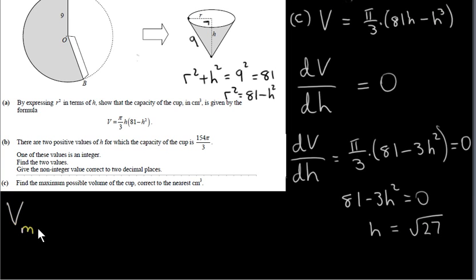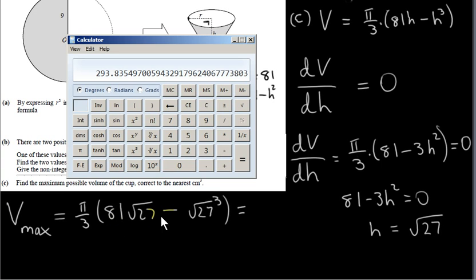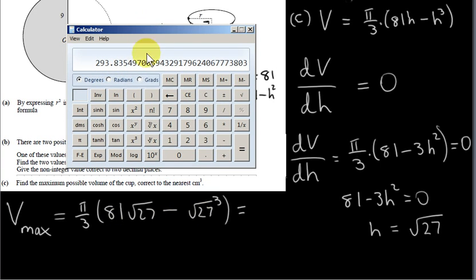Now we find the maximum volume by plugging H equals root 27 into the volume formula. We can call it V max to emphasise we're getting the maximum volume. We get pi over 3 times 81 times root 27 minus root 27 cubed. Working this out gives 293.835... Rounding to the nearest centimetre cubed — that means rounding to the nearest integer — we look at the first decimal place, which is 8 or more, so we round up to 294.